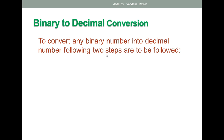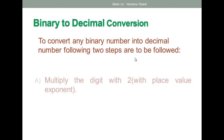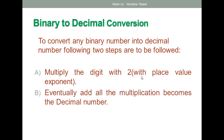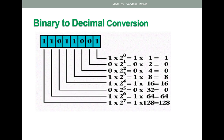To convert any binary number into decimal, two steps are to be followed. The first step is to multiply the given binary digit with 2 to the power. The second step is that after multiplying each binary digit with 2 to the power, you add all the multiplication results, and after that you will get the decimal number.